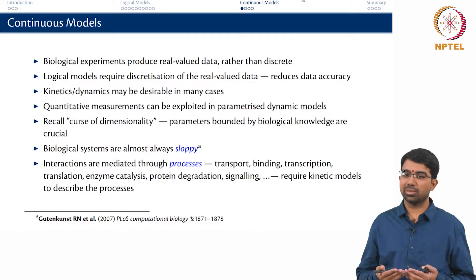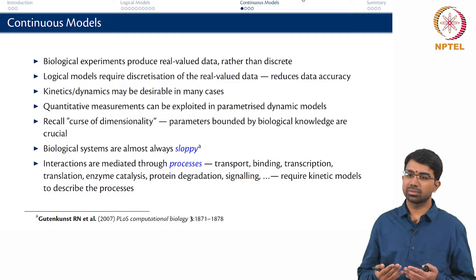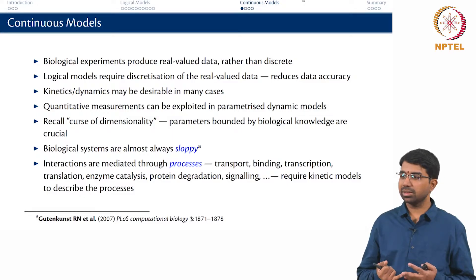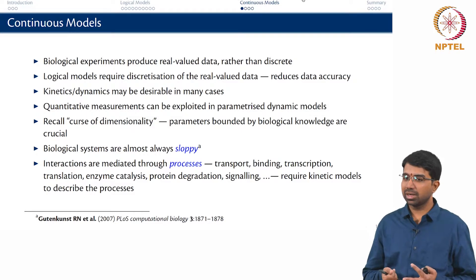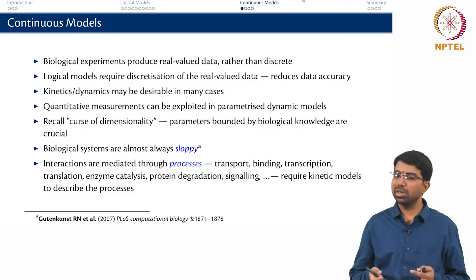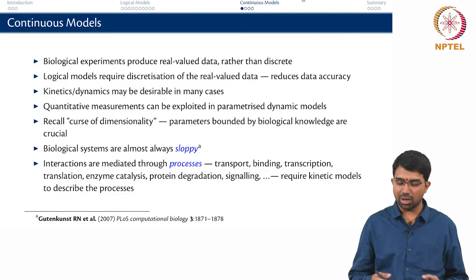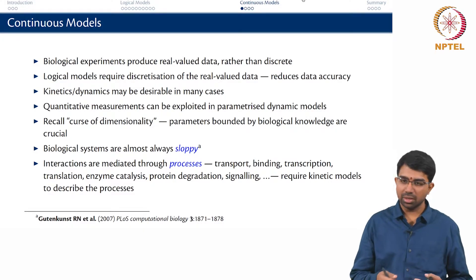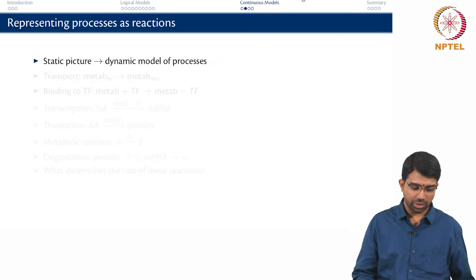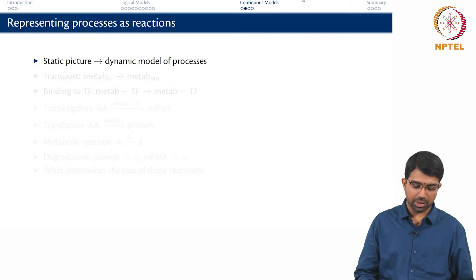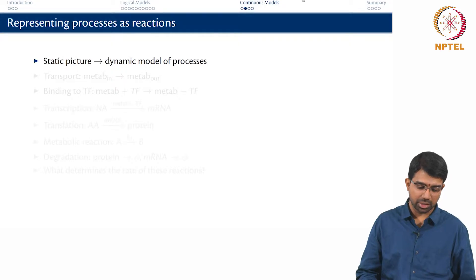What are the classic kinetic models that we need to worry about? Michaelis-Menten kinetics, Hill kinetics, and mass action kinetics. Invariably you can represent all of these processes using one of these classic kinetic models.